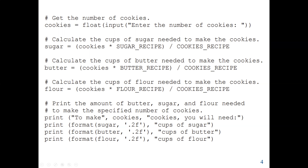Now we have finished our calculations. We need to print the amount of butter, sugar, and flour needed to make the specified number of cookies entered. To display the results, we use the format function with two decimal places — 0.2f — inside the print function. So we print the number of sugar, butter, and flour needed.